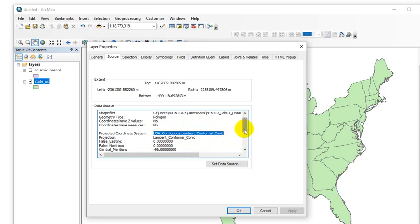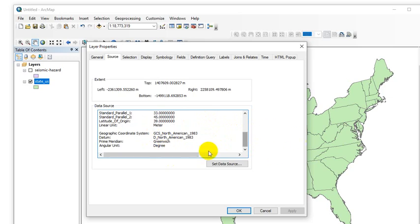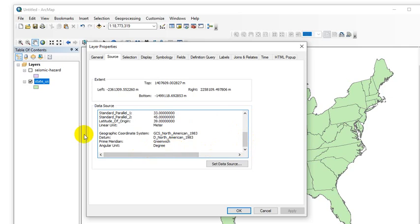If you ever see the units of meters associated with a data set, it is a projected data set, period. If you see units of degrees associated with the data set, you need to look and make sure there aren't units of meters. If it's just degrees, then it's a geographic coordinate system.